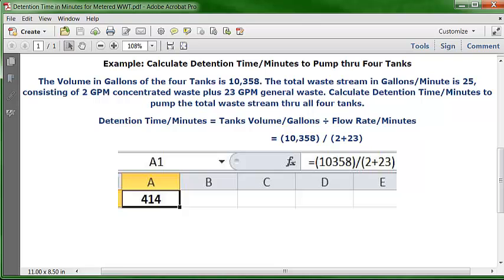If you want to enter this in your own spreadsheet, just open up a blank worksheet. Put your cursor in cell A1, come up to the formula bar, and start typing in this formula. Put in the equal sign, open parentheses, 10,358, close parentheses, division key, open parentheses, then 2, plus sign, 23, close parentheses. Then hit enter.